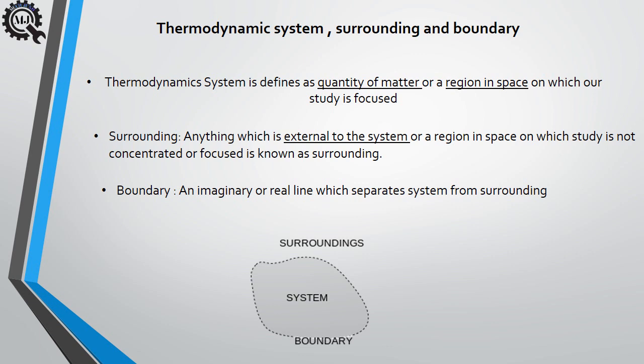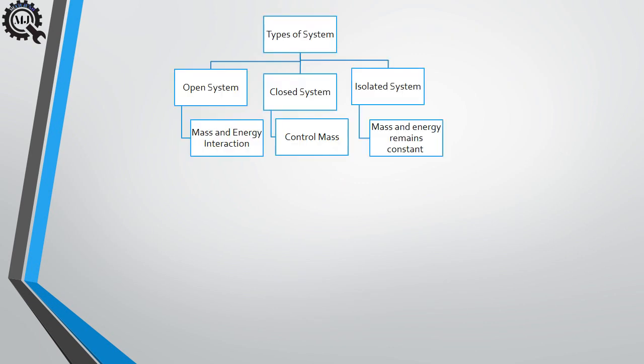Boundary is an imaginary or real line which separates the system from the surrounding. Now, types of system: there are three main types of system — open system, closed system, and isolated system. Open system, as the name itself says, is open and has interaction with the surrounding. It is defined as a system in which both mass transfer and energy transfer can take place between the system and surrounding.